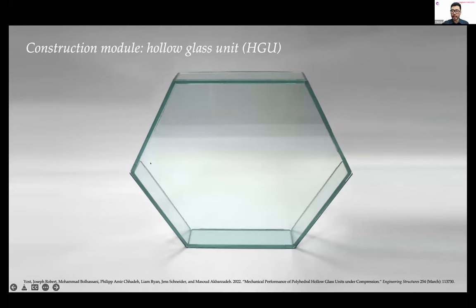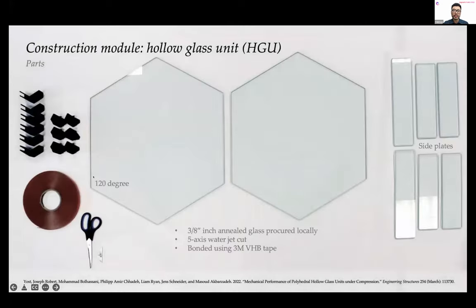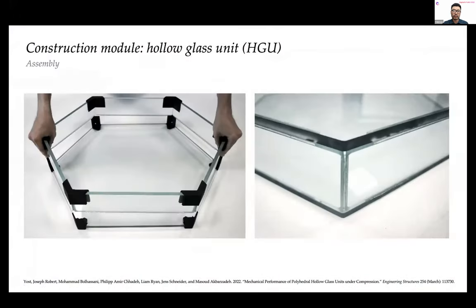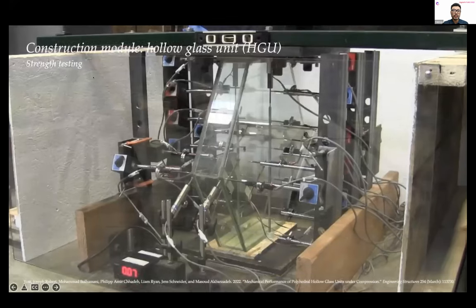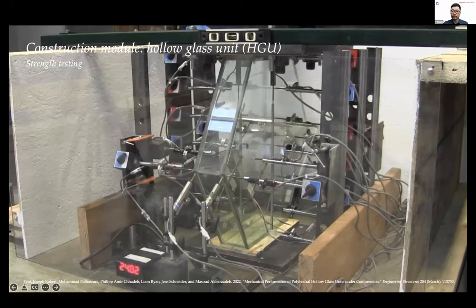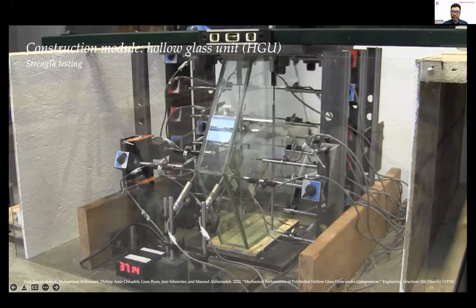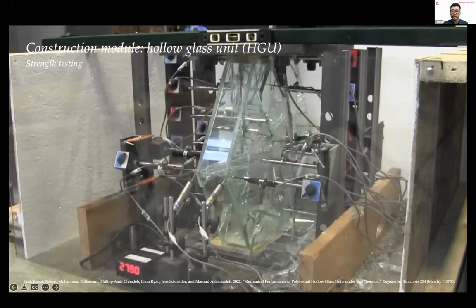I'll start by providing history and detailed context of this research project. In one of our papers, we proposed a construction module called hollow glass unit. This module is made of one centimeter annealed glass - regular window glass. All edges are cut using 5-axis water jet cutting, and all parts are bonded together using 3M VHB tape. Assembly of the hollow glass unit is fairly easy and precise thanks to 3D printed PLA jigs.